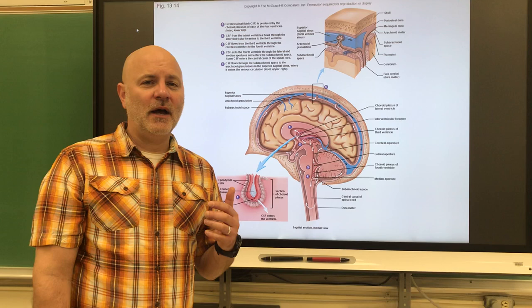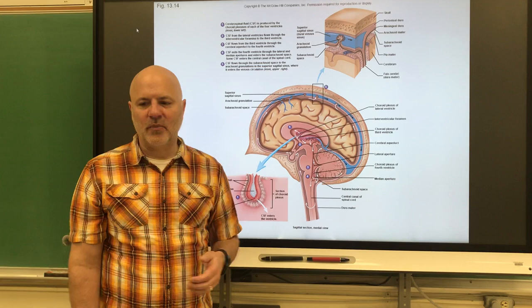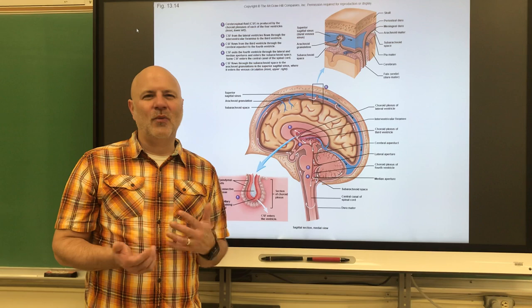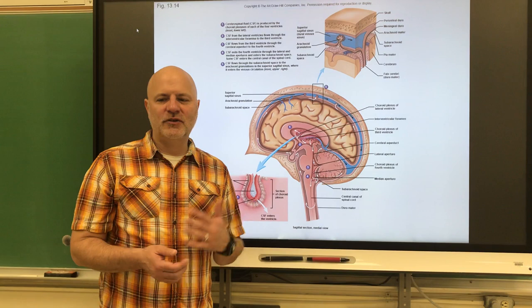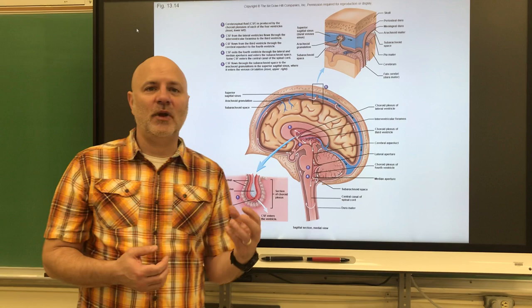Cerebrospinal fluid also provides chemical stability — it delivers nutrients to the central nervous system and removes waste. The brain is only about 2% of our body mass (two to three pounds), yet it receives 25% of our blood and 20% of our body's oxygen and glucose.